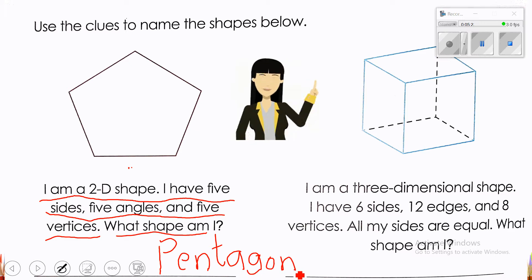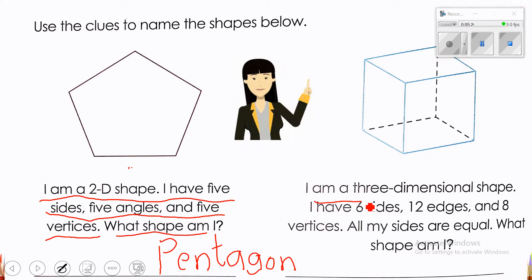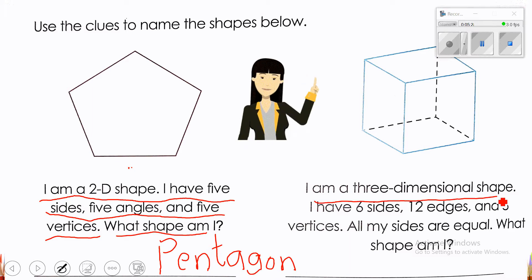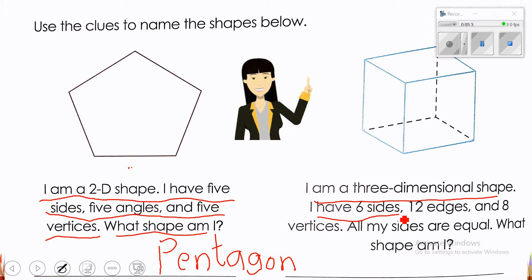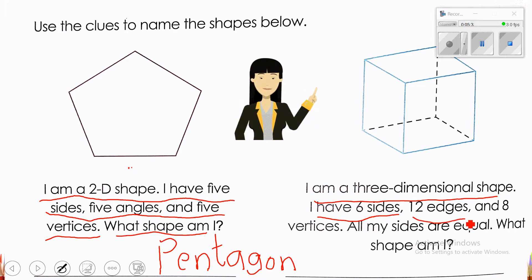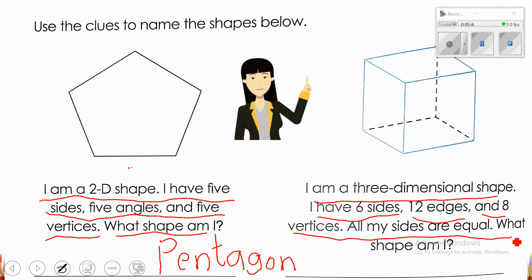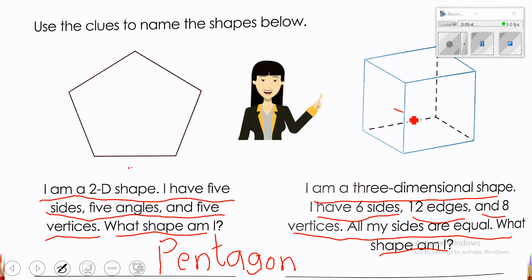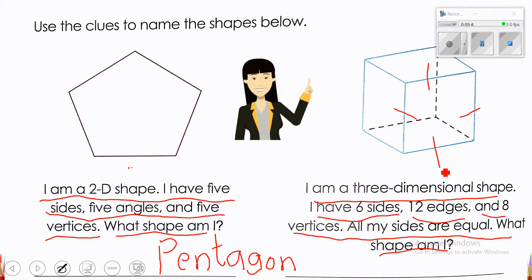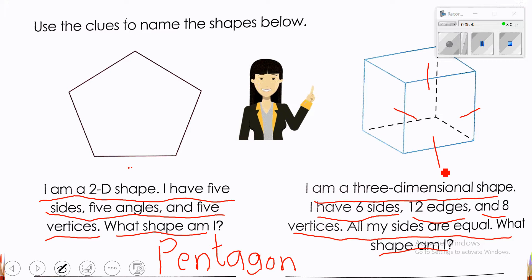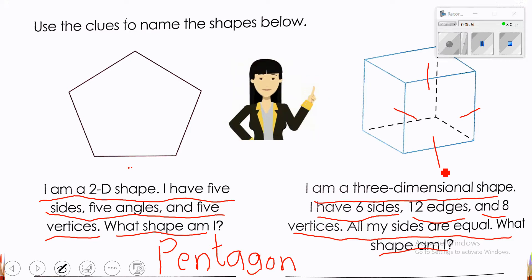Next riddle: I am a 3D shape. I have 6 faces, 12 edges, and 8 vertices. All my faces are equal. What shape am I? If all the faces are equal, that means it has square faces. What 3D shape has square faces? Perfect — it's a cube.